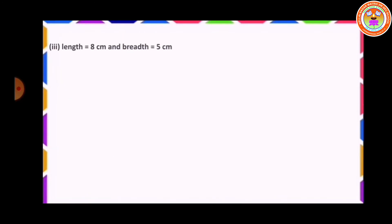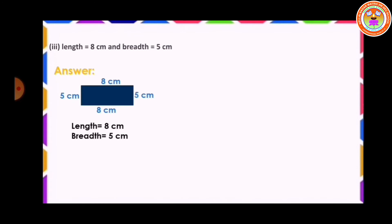Third sum: length equal to 8 centimeter and breadth equal to 5 centimeter. Draw one rectangle, length 8 centimeter, breadth 5 centimeter. The formula of the area of the rectangle is equal to length into breadth, that is 8 centimeter into 5 centimeter, which is equal to 40 centimeter square.